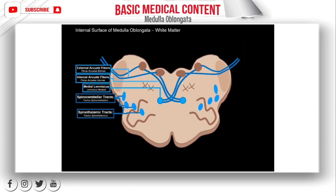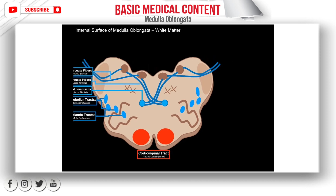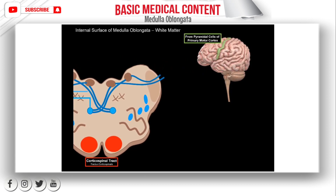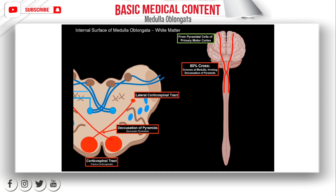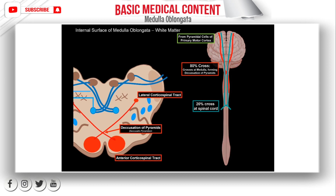Now let's do the descending tracts. The most significant is located within the pyramids of the medulla, called the corticospinal tract. These fibers originate from the pyramidal cells of the primary motor cortex and descend. 80% of the fibers cross at the medulla oblongata region, forming the decussation of pyramids. After they cross, they descend as the lateral corticospinal tract. The remaining 20% descend as the anterior corticospinal tract and only decussate at the region they exit at the spinal cord. They are responsible for voluntary movements of the skeletal muscles.